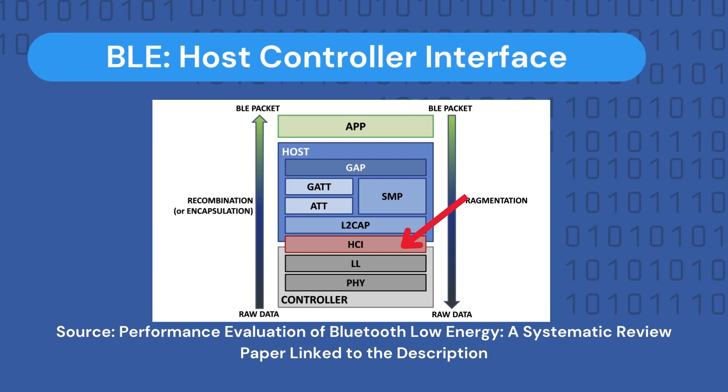The third layer is the Host Controller Interface, a standard protocol that handles communication between the controller and host. The controller is the lowest part of the protocol stack, and the host is the core of the BLE protocol stack, managing communication between the hardware and the user application. Its role is to define a set of commands and events that translate raw data from the lower controller part into data packets and send them via serial port to the host layer, and vice versa.